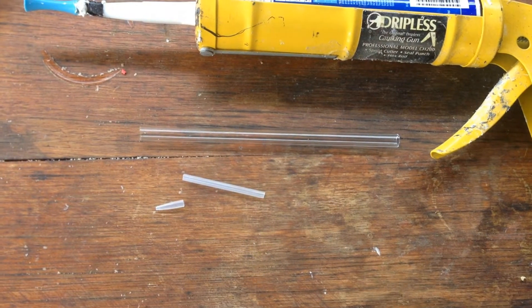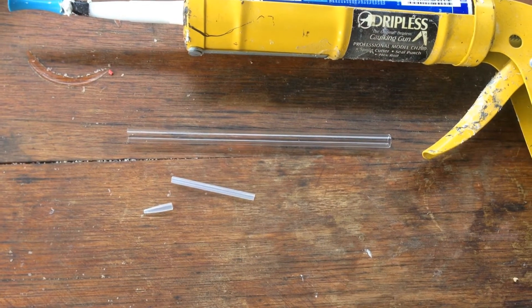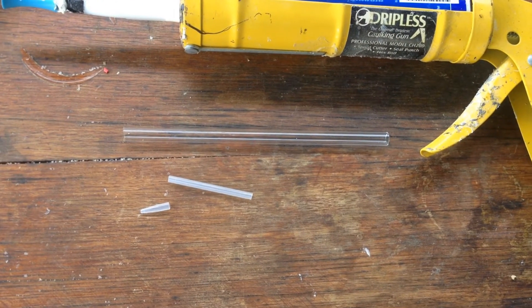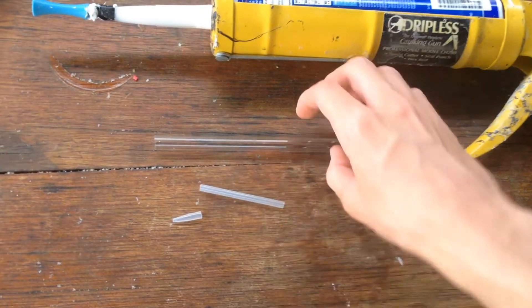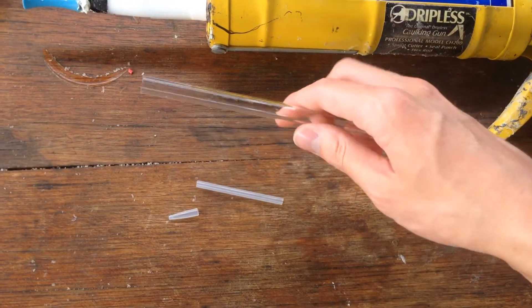So in the near future I'm going to need to be doing a couple of titrations of some acidic and basic solutions. And rather than going out and buying a proper burette, I thought we could make it out of one of these glass rods.